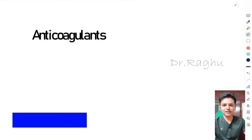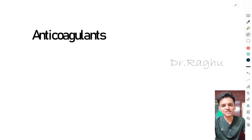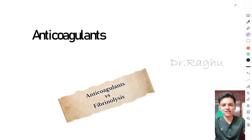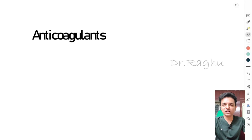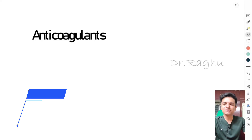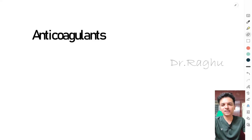Welcome back. In this video I will discuss anticoagulants. The first thing to understand is that anticoagulants are not fibrinolytic agents. Anticoagulants prevent the formation of a clot — they can be natural (endogenous) or synthesized outside the body. Fibrinolysis, by contrast, is the dissolution of a clot after it has formed. Agents that do this are called fibrinolytic agents. Don't confuse anticoagulants with fibrinolytic agents.